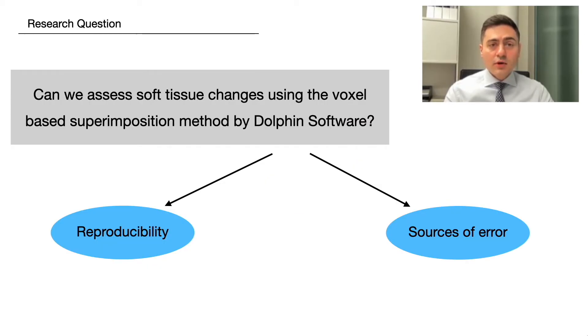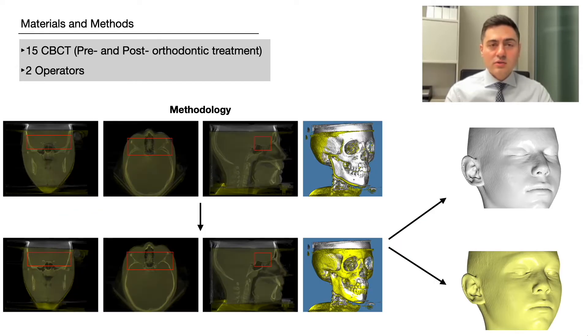Since modern orthodontics is mainly focused on the impact of treatment on the soft tissues, we wanted to know if this voxel-based superimposition method is reliable in assessing facial changes.